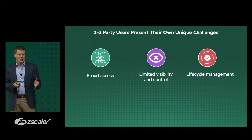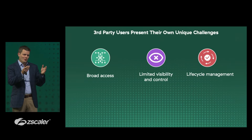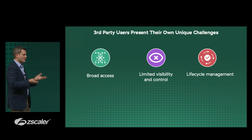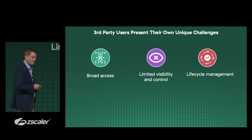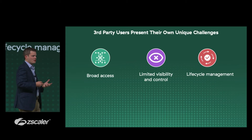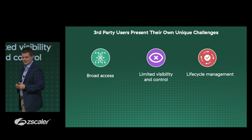Third-party users have their own set of challenges. By connecting them to the network, they are allowed very broad access when their jobs usually don't require it. There is limited visibility and control of the machines they use — typically you cannot install an agent, giving up a lot of visibility. Finally, lifecycle management is a challenge: usage is ephemeral — come in, get the job done, offboard — but access must be revoked so stale access doesn't sit around.